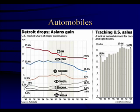This shows the automobile market shares. I believe Toyota is now number three — this graph ends in 2004. But it shows GM, Ford, Chrysler, Toyota, Honda, and Nissan as the major producers.